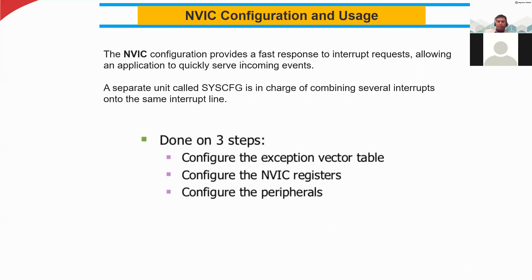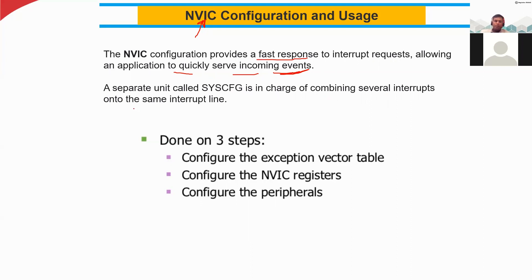The NVIC configuration provides fast response to interrupt requests, allowing an application to quickly serve incoming events — that is, interrupts. Whenever some event, exception, or interrupt happens, we respond immediately and execute them. NVIC helps set up the priority, which one is first, which one is next, and how to stop the main program. A separate unit called CCFG is in charge of combining several interrupts onto the same interrupt line.